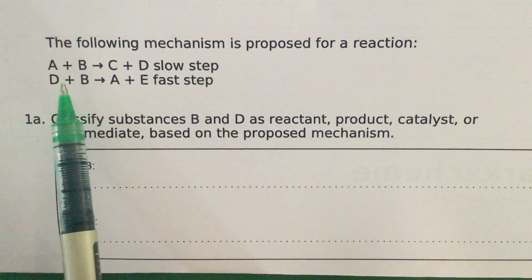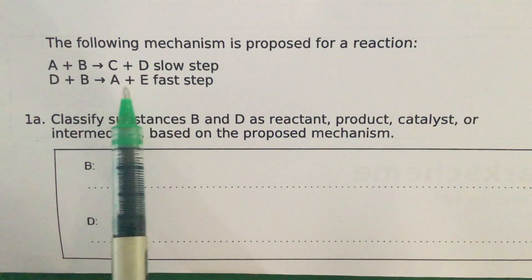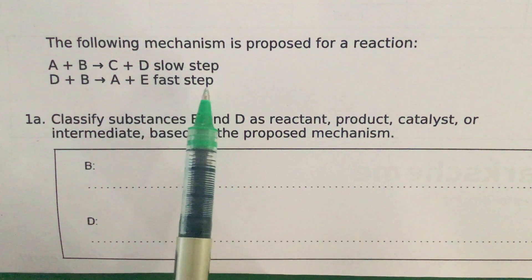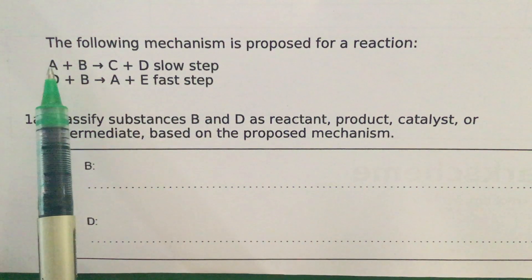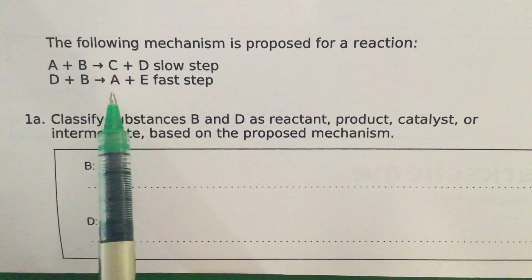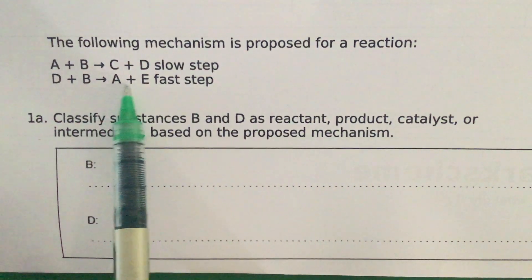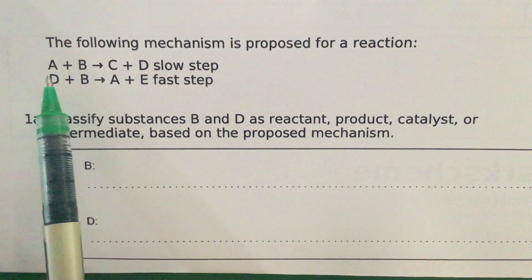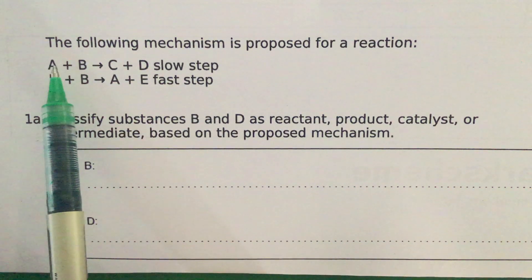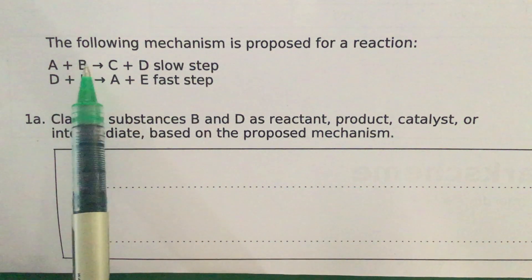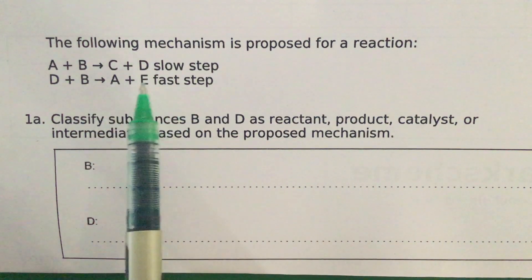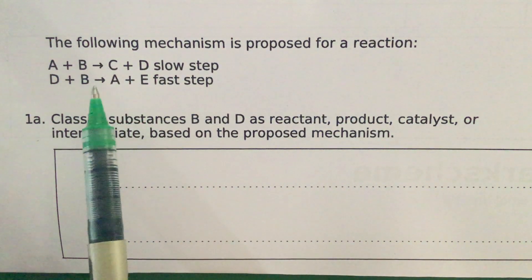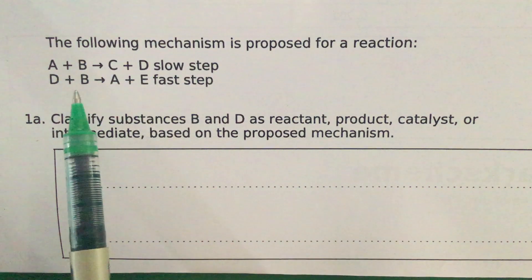go on to react together to give you A and E, and that is the fast step. Notice that you start off with A and you end up with A. That suggests that A does somehow take part in this slow or rate determining step, but at the end it's regenerated. So what that suggests is that A is